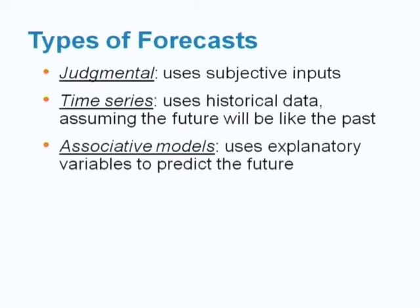The last type is called the associative model, which uses equations that consist of one or more explanatory variables that can be used to predict demand. For example, demand for a pen might be related to variables such as price per unit and the amount spent on advertising, as well as specific characteristics of the pen.